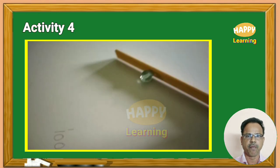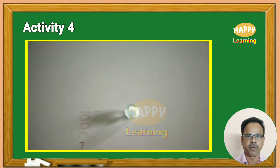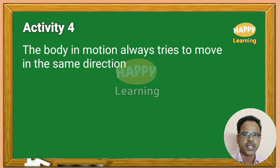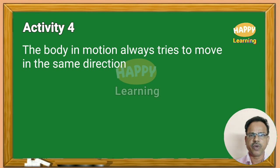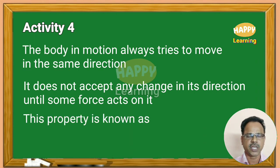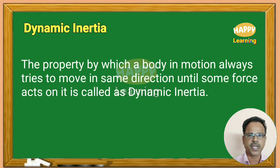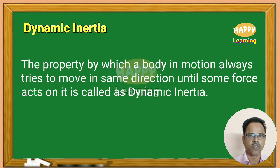Activity 4: Here a marble is rolling. It moves in the same direction until it is disturbed by some external force. The body in motion always tries to move in the same direction; it does not accept any change in its direction until some force acts on it. This property is known as dynamic inertia — the property by which a body in motion always tries to move in the same direction until some force acts on it.